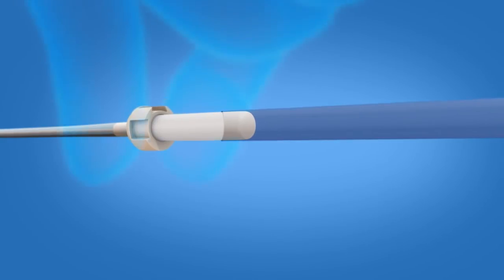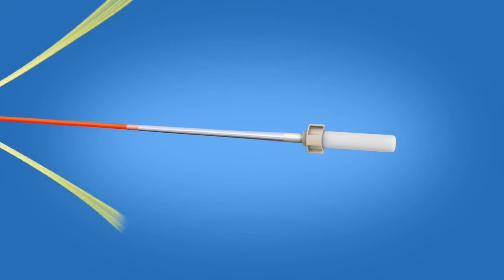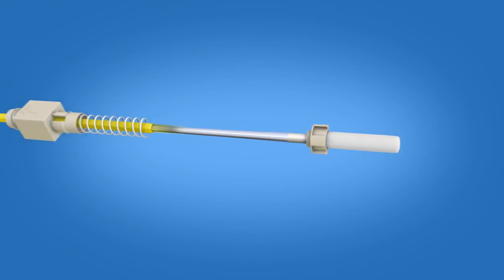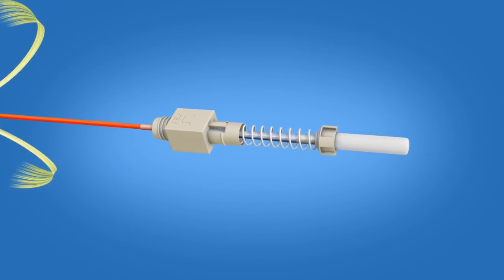Hold the base of the ferrule unit and remove the transfer tubing. Bring the spring unit up to the ferrule unit. Pull the kevlar and cable jacket out of the spring unit.